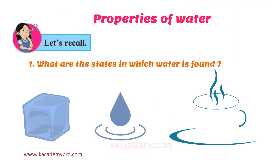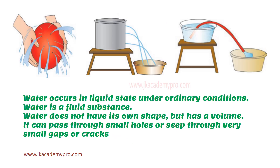You have already learnt about the properties of water, so let's recall it. What are the states in which water is found? We know that water is found in three states: in the solid state in the form of ice, in the liquid state in the form of water, and in the gaseous state in the form of water vapor. Let's learn the other properties of water.